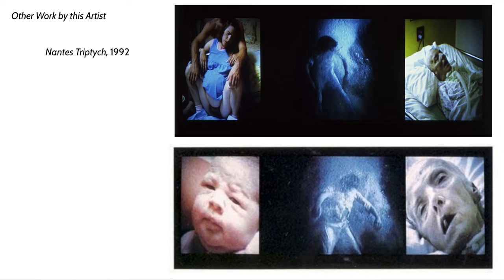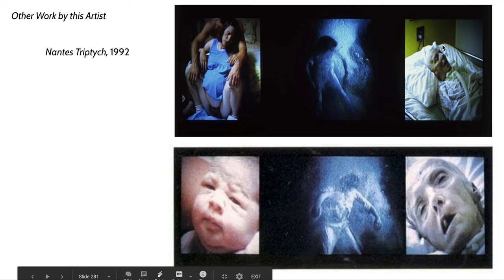Bill Viola's work oftentimes involves parallel narratives happening simultaneously. This triptych — an artwork involving three separate pieces — has a narrative of birth, then a kind of limbo or life given the age of the figure, and then a deathbed. The video on the left is a woman giving birth to a baby, the second is a figure floating in water, and the last is a person on a ventilator presumably on their deathbed.